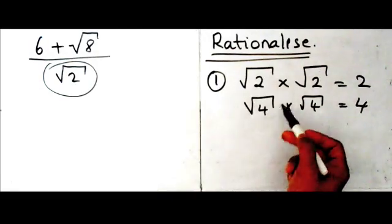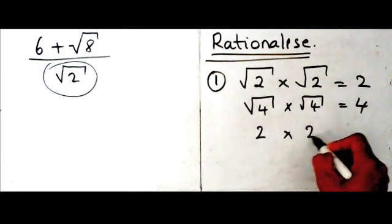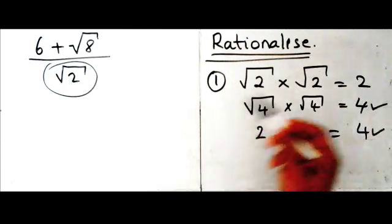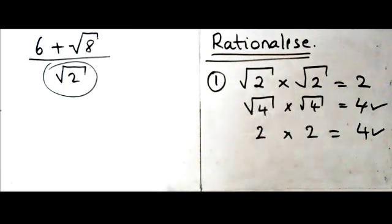And the reason why it works is because if I take the square root of four, the answer is two. If I take the square root of four again, the answer is two, and two times three is equal to four. So whenever you're multiplying two thirds that are the same, the answer is the number underneath the square root.